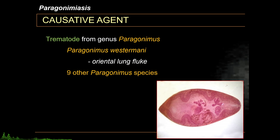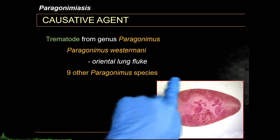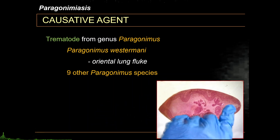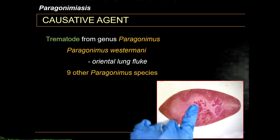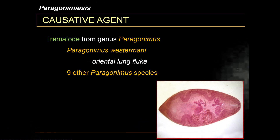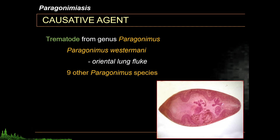If you look at the adult Paragonimus, you can see that it is ovoid in shape. It possesses an oral and a ventral sucker. As with most trematodes, it is also hermaphroditic, which means that it possesses an ovary and testes in one adult.